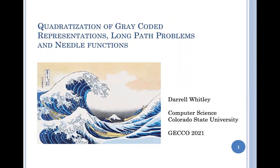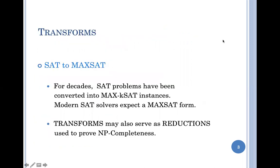This talk is about converting gray code representations, long path problems, and needle functions into a quadratic form. Transforms have been used for 50 years to convert problems — for example, SAT problems into max-k-SAT. Modern SAT solvers expect a max-SAT form, usually k-bounded, such as max-3-SAT. Transforms also serve as reductions to prove NP-completeness, as in the case of max-k-SAT.